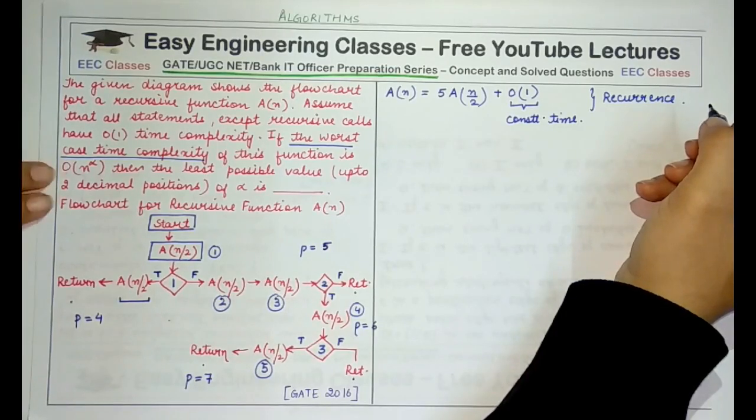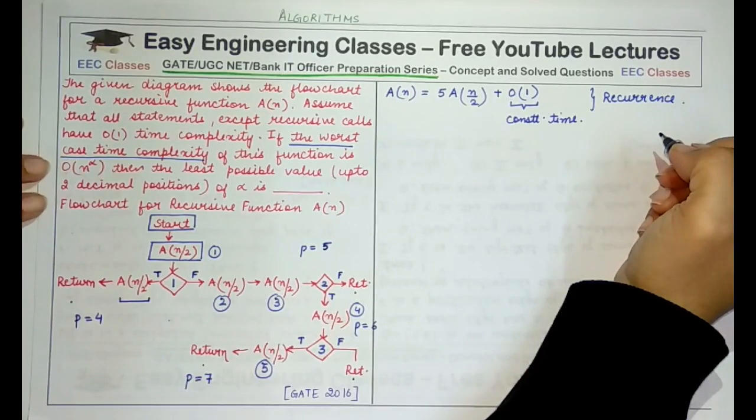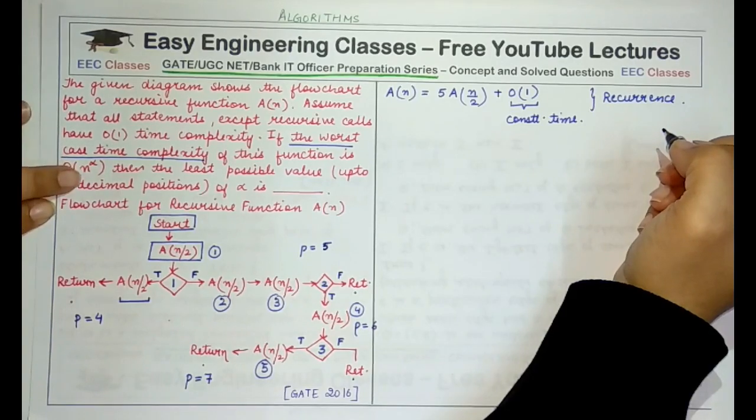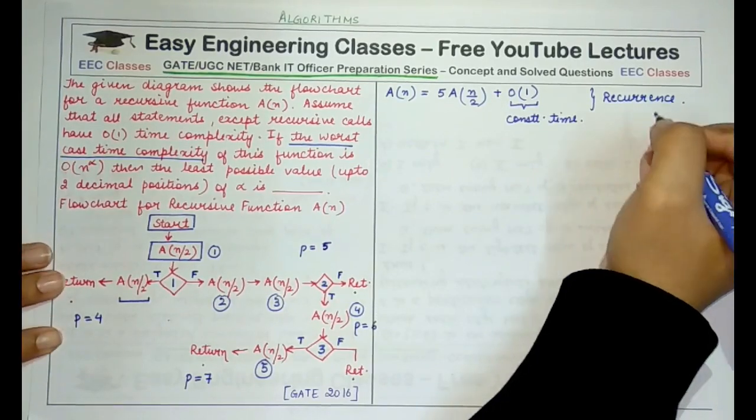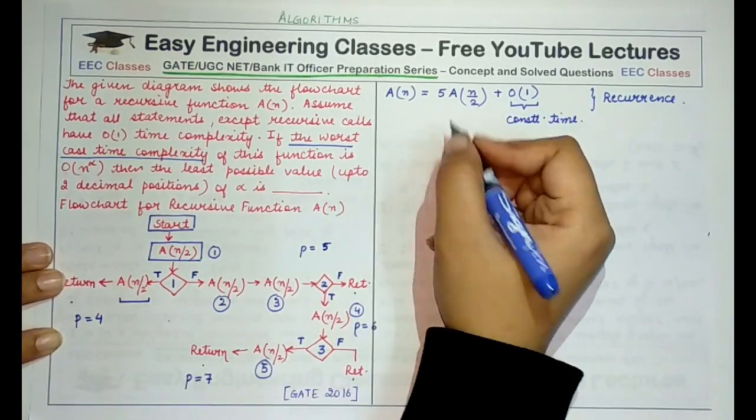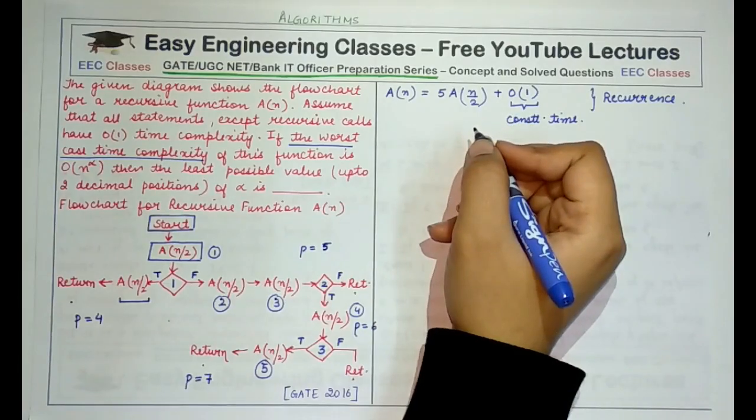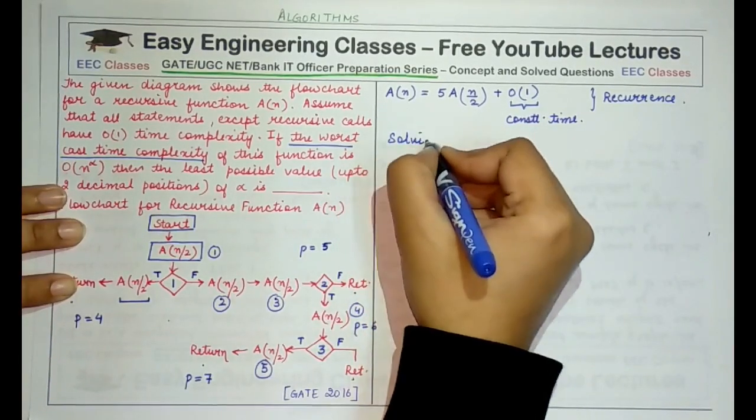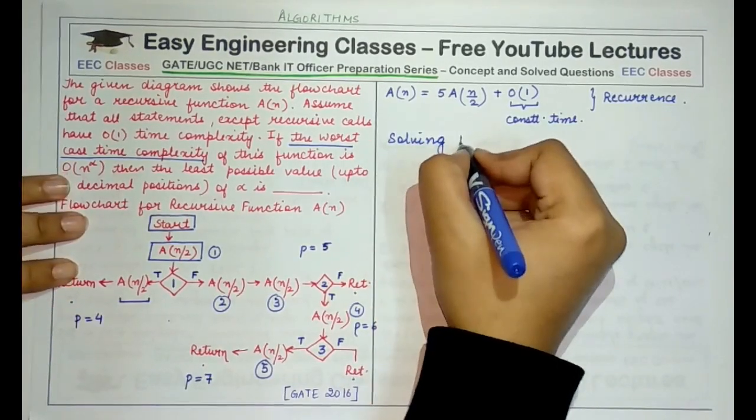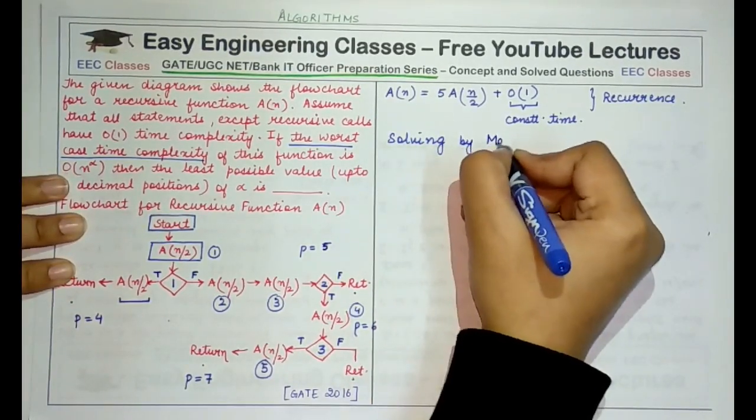Now, if we solve this, we would get the time complexity as something like big O of n raised to power alpha and we have to find the value of alpha to correct to two decimal positions. So solving this recurrence using Master Theorem, what would be the values of a, b, and f(n)? Solving by Master Theorem.